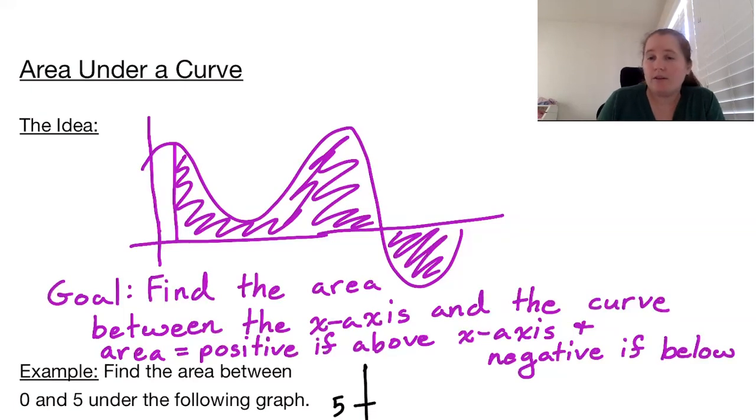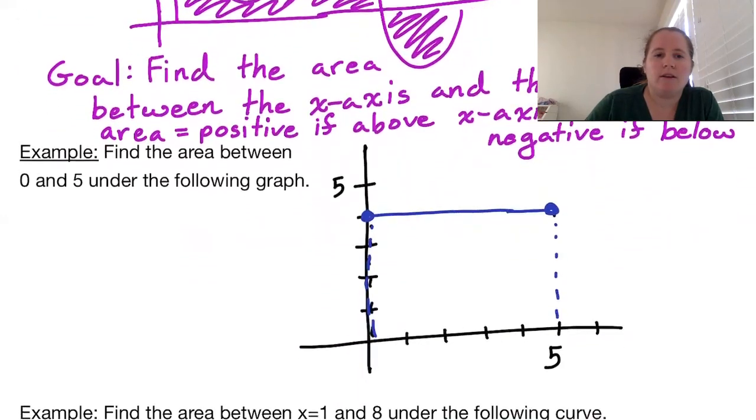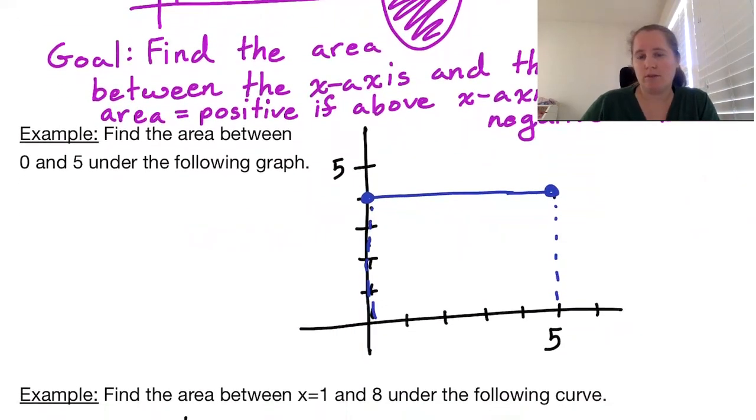The shape that I've drawn would not be very easy to calculate the area using formulas we already know. So we're going to start off with a very simple shape. Let's find the area between 0 and 5 under the graph on the right which is just the horizontal line y equals 4.